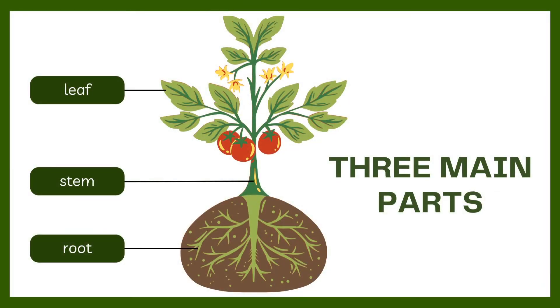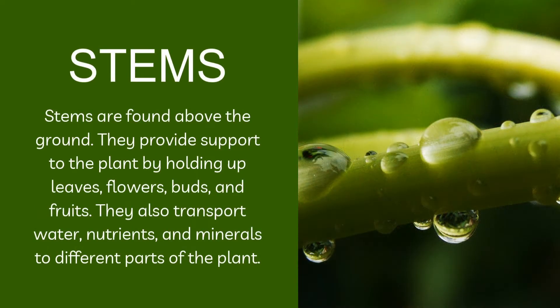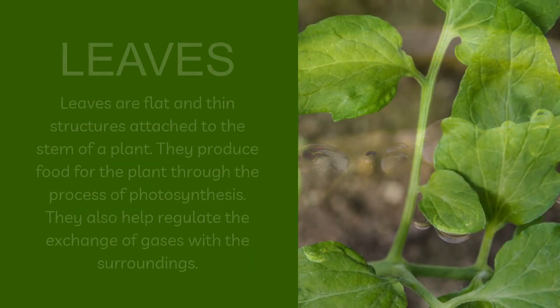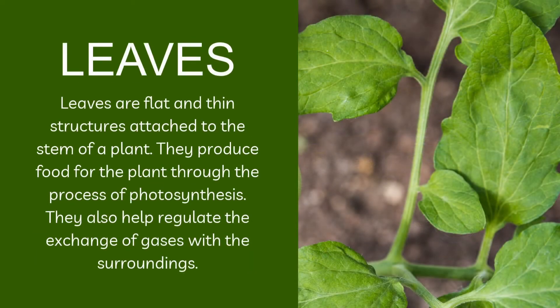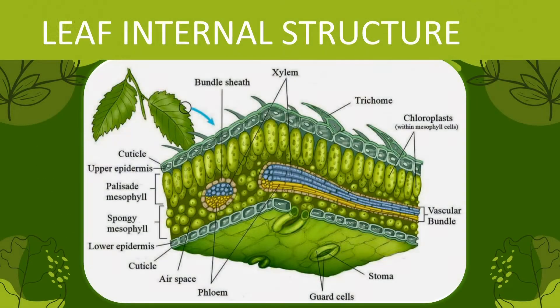The roots, the leaves, and the stem — each part has a unique function to keep the plant healthy. The roots absorb water and minerals from the soil and attach the plant to the ground. The stem supports the plant above the ground and transports water and minerals to the leaves.